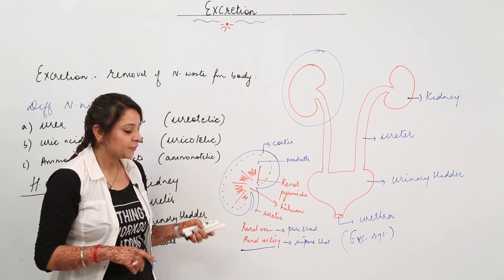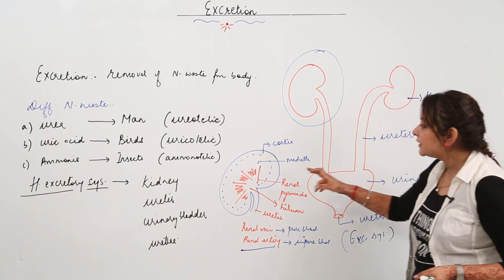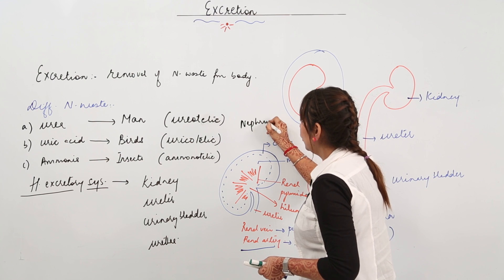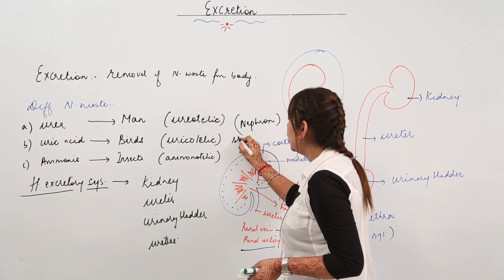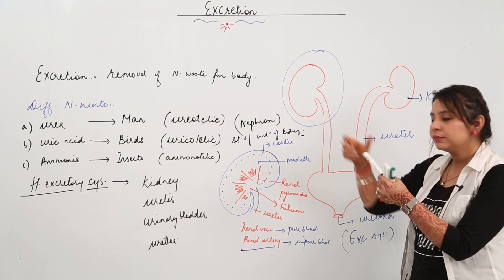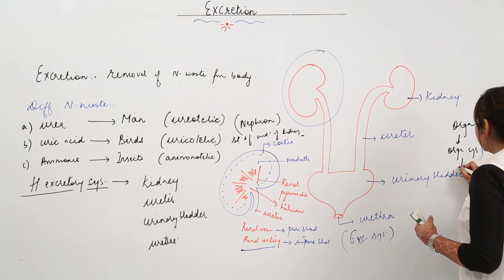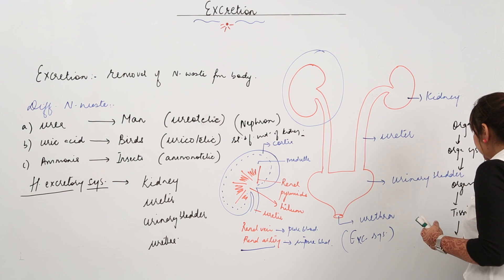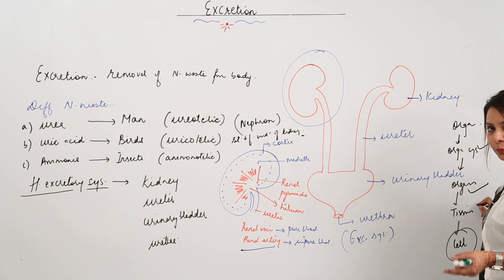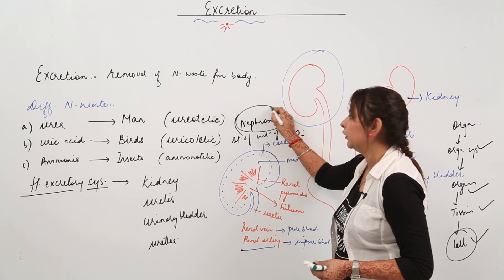This is the structure of the kidney. Since the kidney is an organ, it is formed of tissue, which is finally formed of cells. The structural and functional unit of the kidney is called the nephron. We have a hierarchy: organism → organ system → organs → tissues → cells. So the structural and functional unit of the kidney is the nephron.